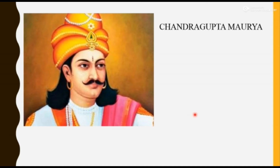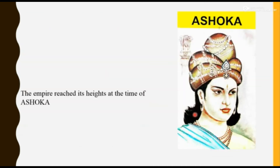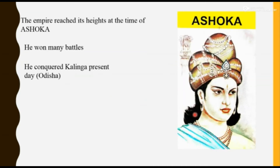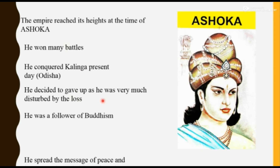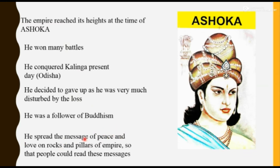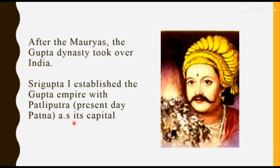Then we saw that the Maurya Empire arrived, in which Chandragupta Maurya was the main ruler. He captured Magadh and became its emperor. We also learned about Ashoka — he fought many battles, then decided to give up violence. His messages of peace and love were inscribed on rocks and pillars. After the Maurya dynasty, the Gupta dynasty entered, with Sri Gupta as an important ruler who established the Gupta Empire and made his capital.